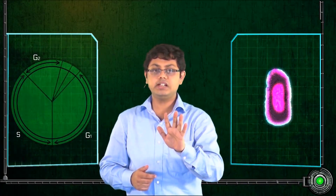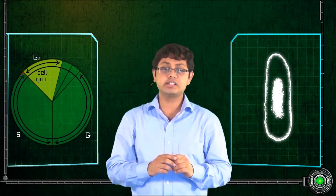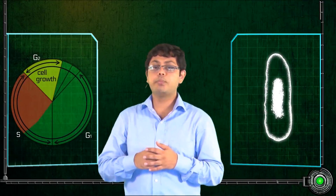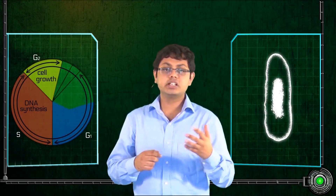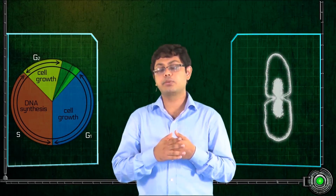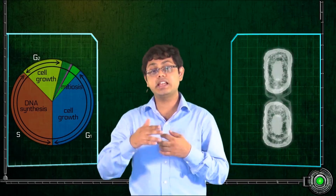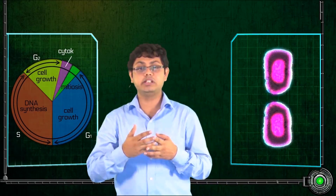If you look at this image, it will give you a general timeframe of what the cell does as soon as it is born. As soon as it is born, it goes through a phase where the cell grows to a particular size. Then it goes through a process of DNA synthesis. Some more time the cell grows, and finally the nucleus divides in the process of mitosis and the cell itself divides by the process of cytokinesis.